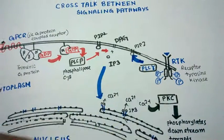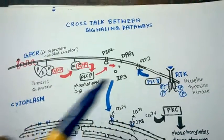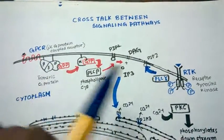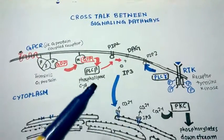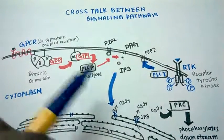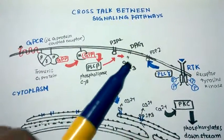Thus, we can see how these two distinct signaling pathways, mediated by two distinct receptors, are cross-talking with each other. Between these two signaling pathways, there is a degree of overlap.